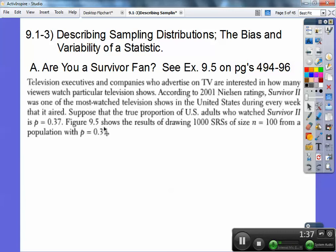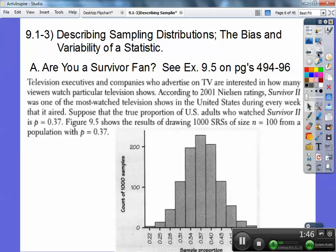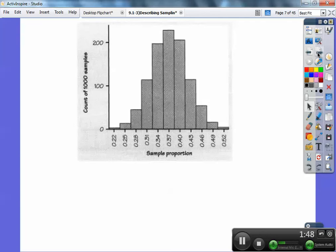Figure 9.5 shows the results of drawing 1,000 SRSs of size 100 from a population with P, the population proportion, being 37%. I have that picture on the other side right here. So here we are, the sampling proportions, 1,000 of them, the 1,000 SRSs.